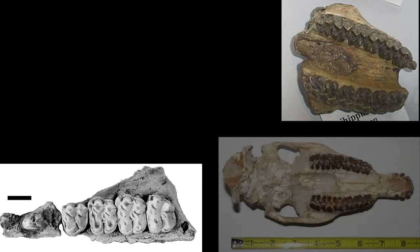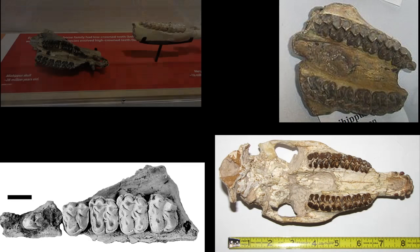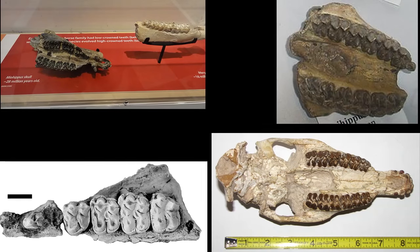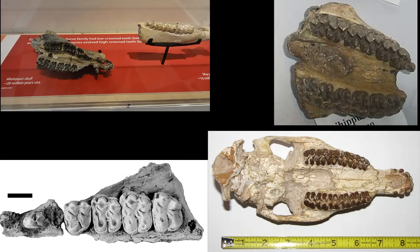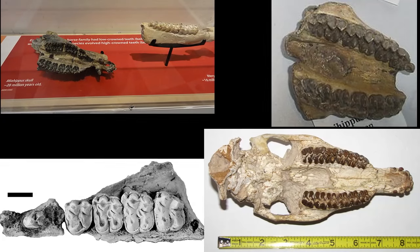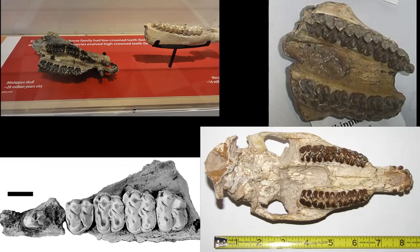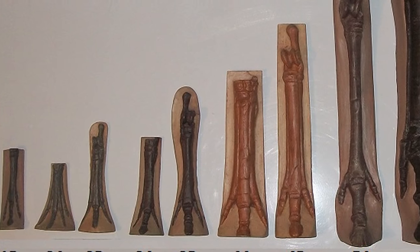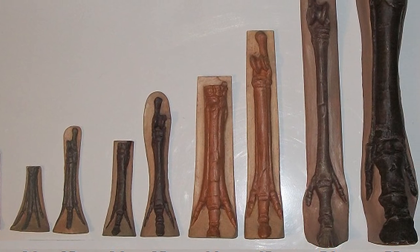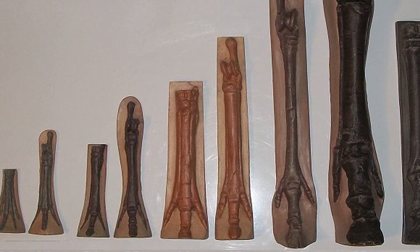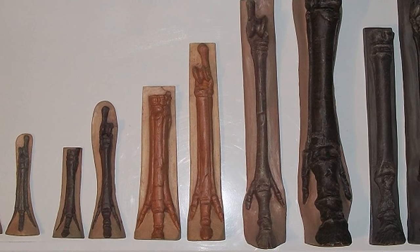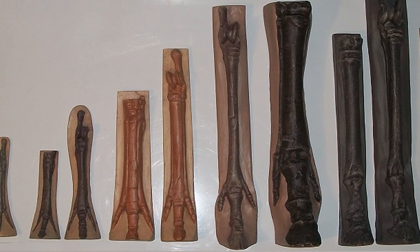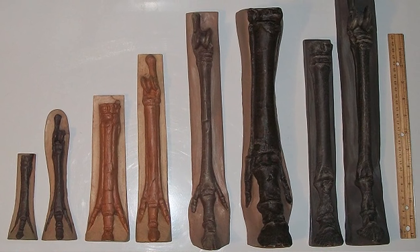Going forward in time through the specimens we've discussed, we see the dentition slowly adapt to a jaw better suited to eating harsh grasses. Additionally, we can also see the gradual elongation of the equine tarsal bones, which gives horses more spring in their step.